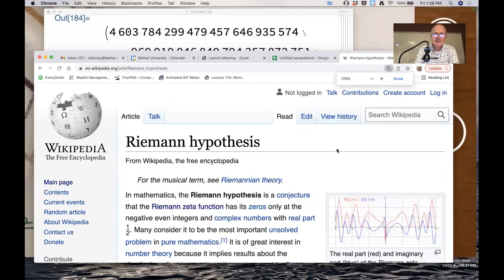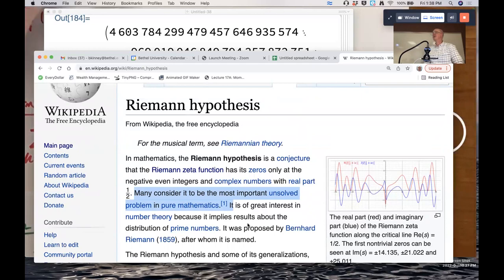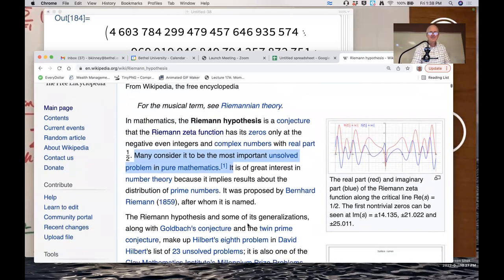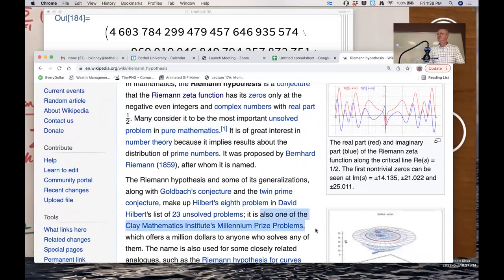The Riemann hypothesis, I consider to be the most important, most famous unsolved problem in pure math. Nobody has ever solved it. If you solve it, you will win a million dollars. It's a millennium prize problem for which solving it gives you a million dollars. I'm serious. That's there. That's right.